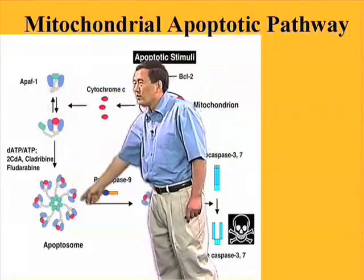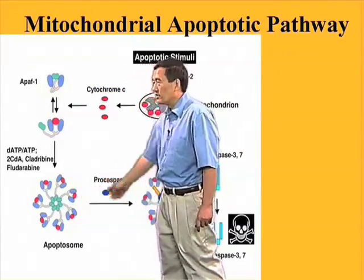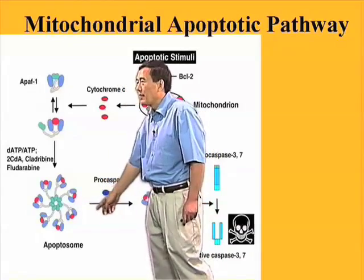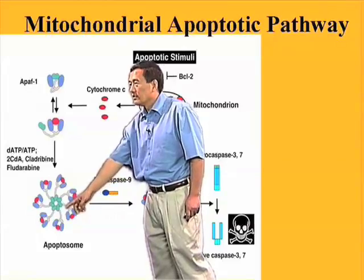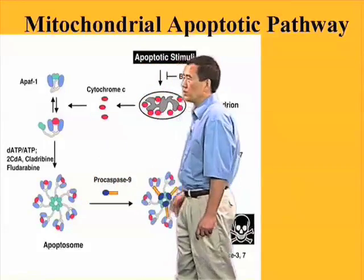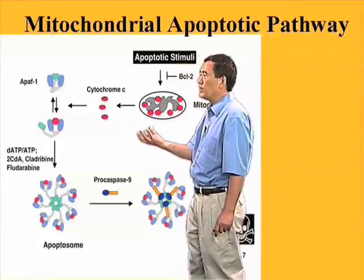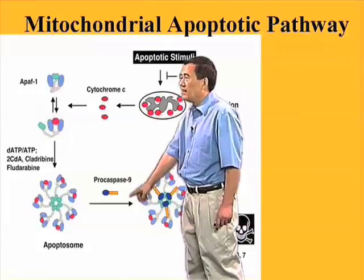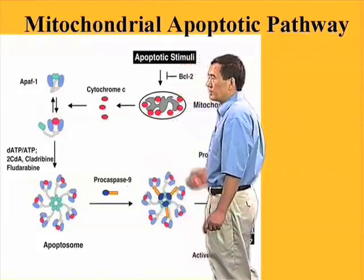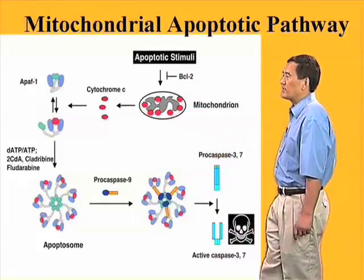After the formation of the apoptosome, which has a wind-wheel-like structure, the CARD domain forms the central ring of this wheel-like structure. The CARD domain now becomes exposed, and it is able to recruit procaspase-9 through CARD-CARD interaction.